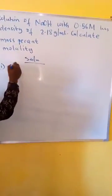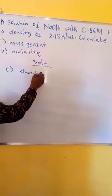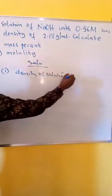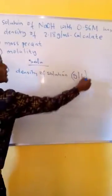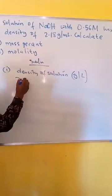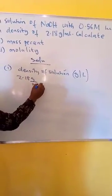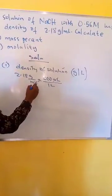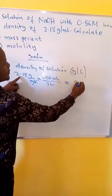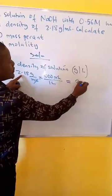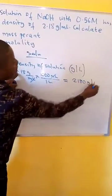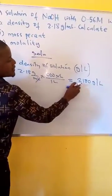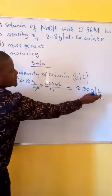First of all, we convert the density of the solution into gram per liter. We have 2.18 gram per milliliter times 1000 milliliter over 1 liter. That gives us 2180 grams per liter. So the mass of solution in 1 liter is 2180 grams.